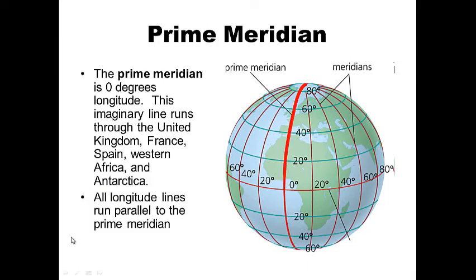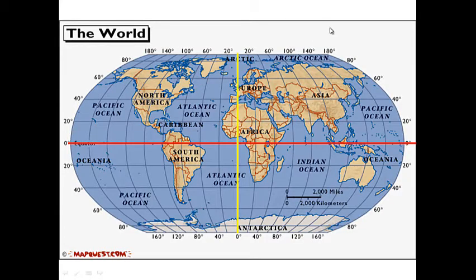Notice the prime meridian runs right down the middle. This imaginary line runs through the United Kingdom, England, France, Spain, western Africa, and Antarctica. All longitude lines also run parallel to the prime meridian. We have the equator in red and the prime meridian in yellow, and notice all the other lines are in degrees running parallel to the equator or prime meridian.